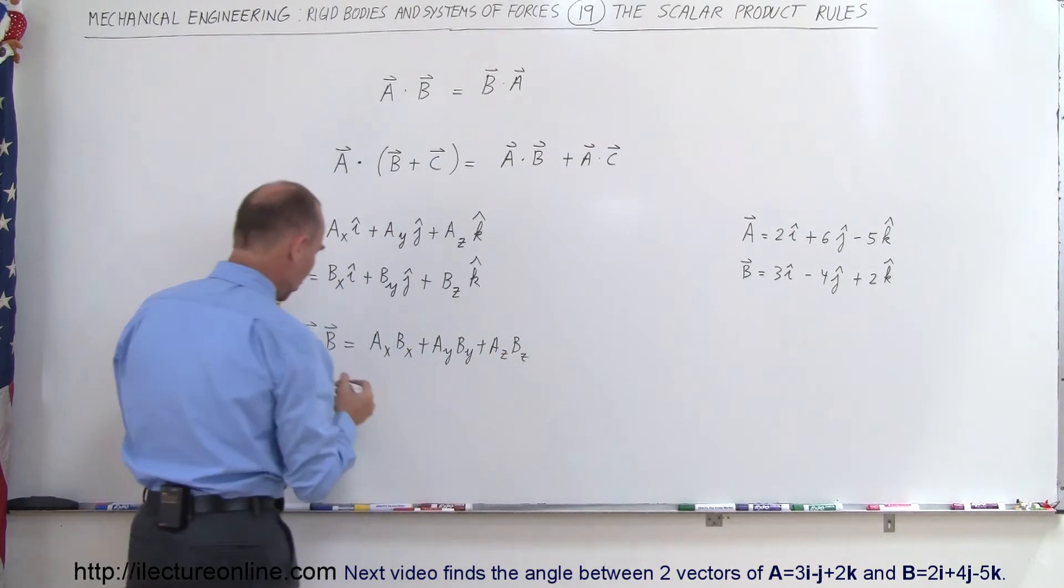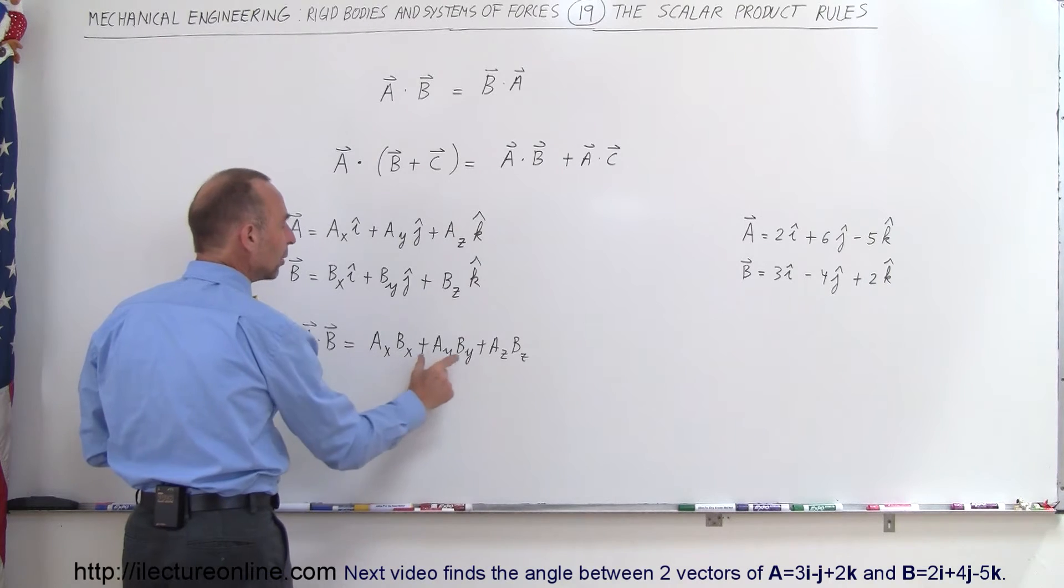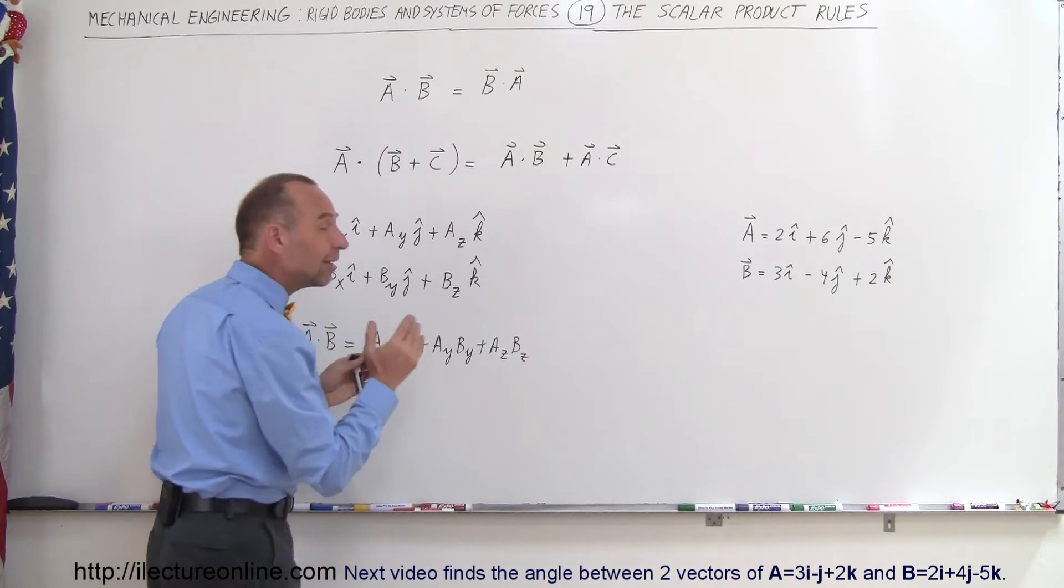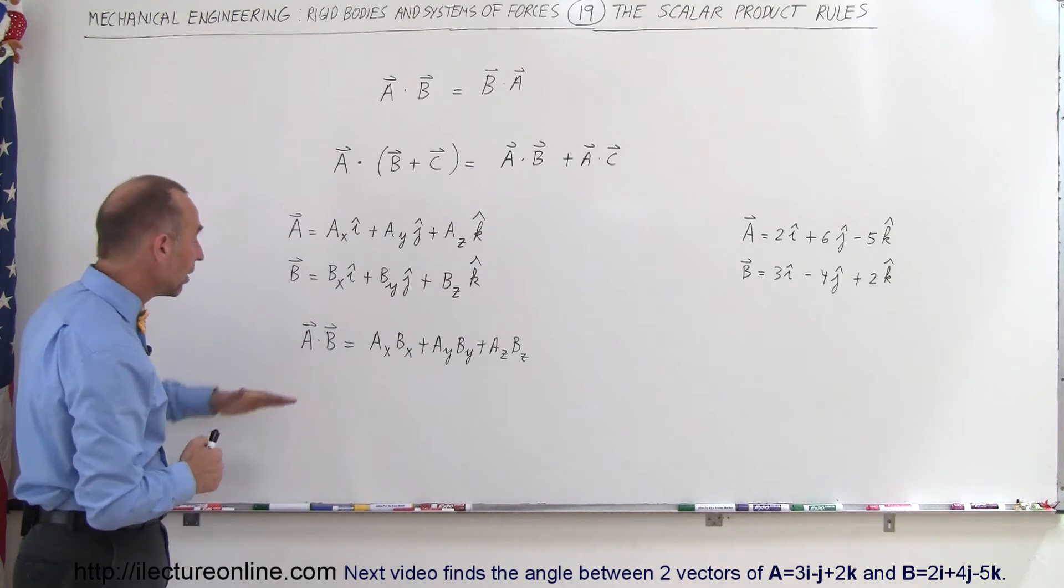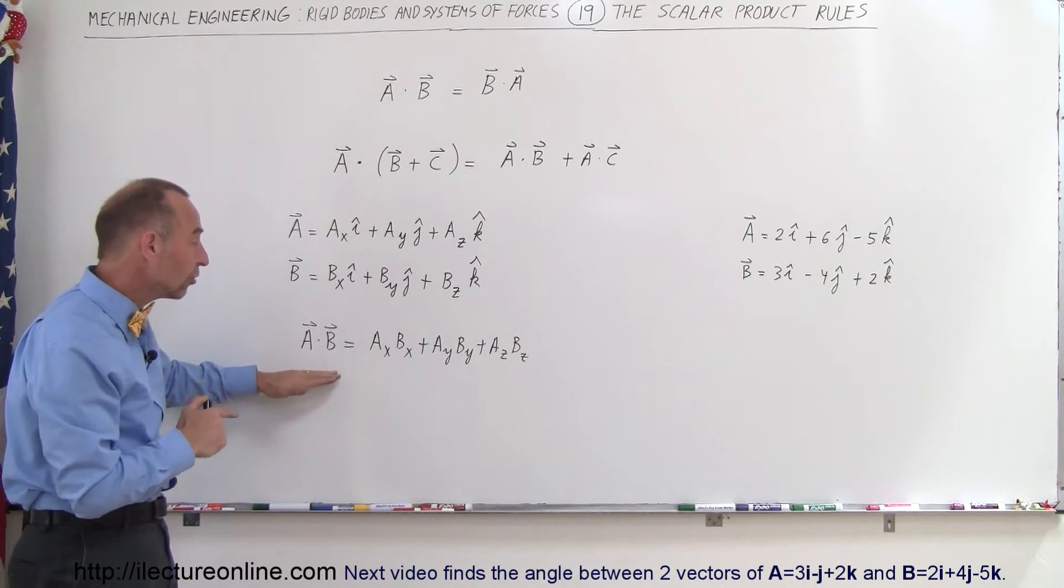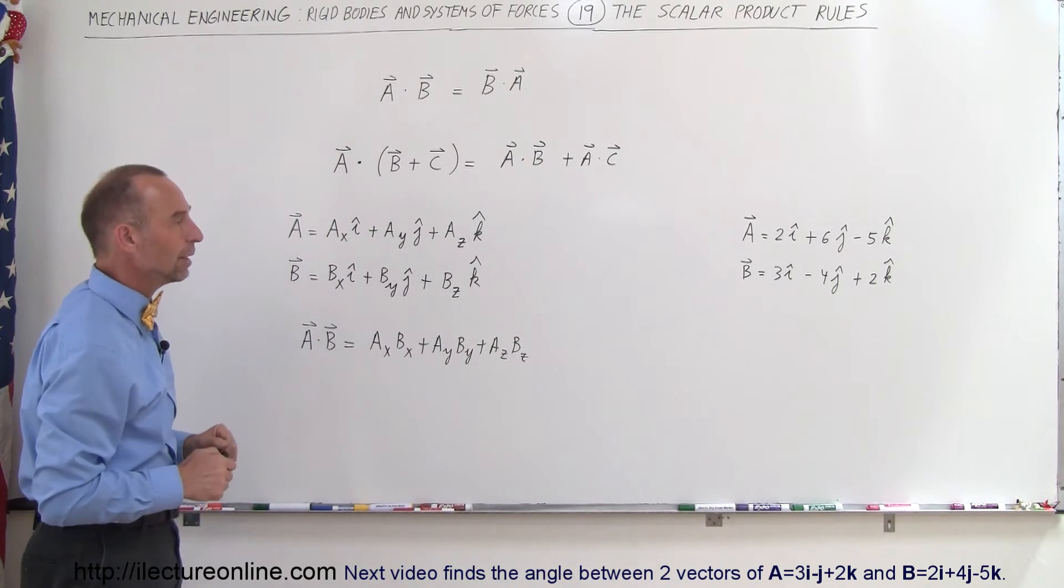So in other words, you can multiply the X components together and the Y components together and the Z components together, and then add all together. That is the scalar product between two vectors. Remember, a scalar product results in a scalar quantity, not in a vector quantity.